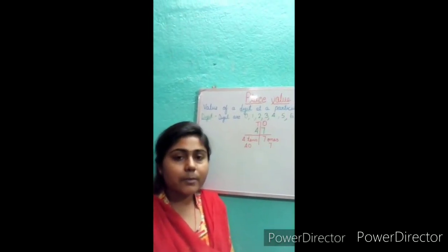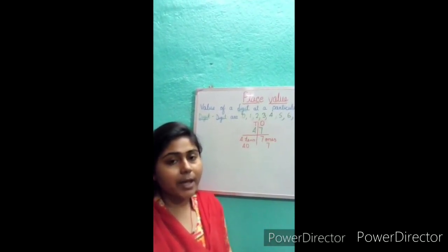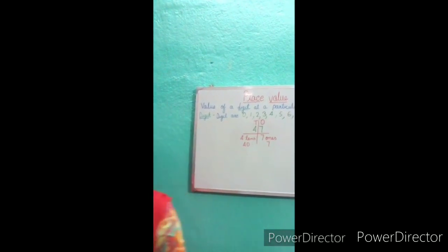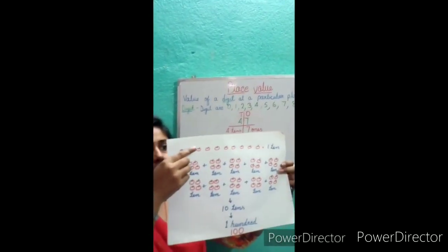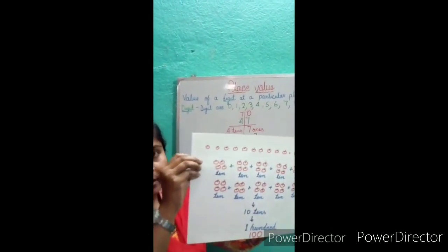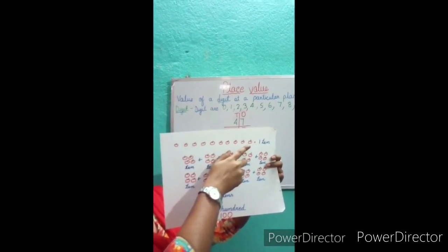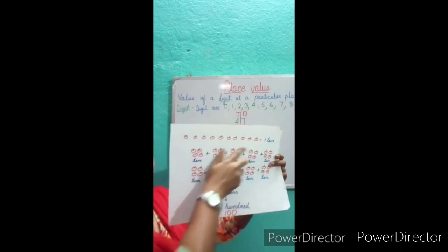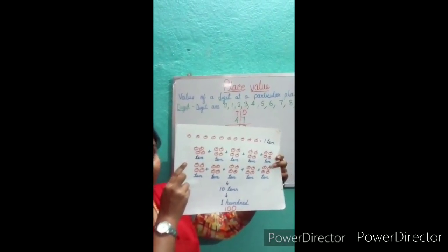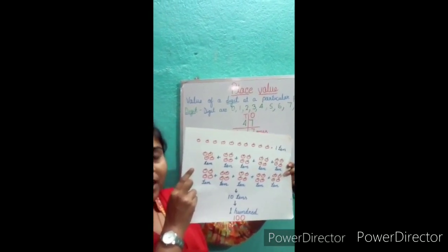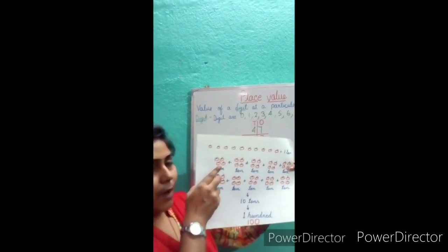So one day, one farmer plucked some apples from his garden and started counting them one by one — 1, 2, 3 — like this he started counting. He got 10 apples, which we can write as 1 ten. He saw that if he makes a group of 10, it is very easy to count the apples. So he started making groups of 10.